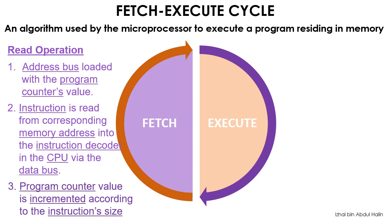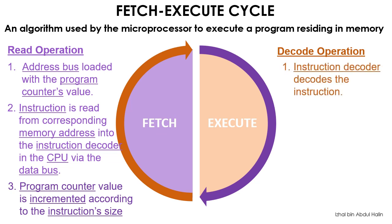The decode operation in the execute cycle is then initiated by the 68k microprocessor. The instruction is decoded by the instruction decoder and finally executed by the CPU. This concludes the first fetch-execute cycle. The fetch cycle is initiated again to fetch the next instruction, followed by the next execute cycle. The fetch-execute cycle is repeated until all of the instructions in the program have been executed by the 68k microprocessor.